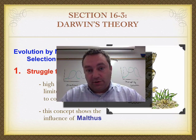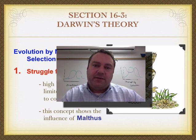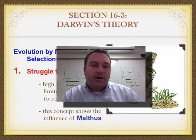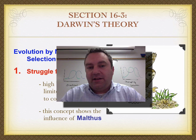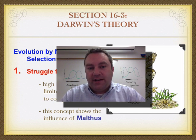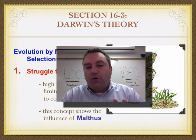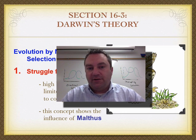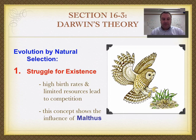Welcome to episode number four in this series on evolution. This episode is our second dealing with the details of Darwin's mechanism of evolution called natural selection. We're going to look at the four main parts of his theory, and first we're going to start off with the struggle for existence.